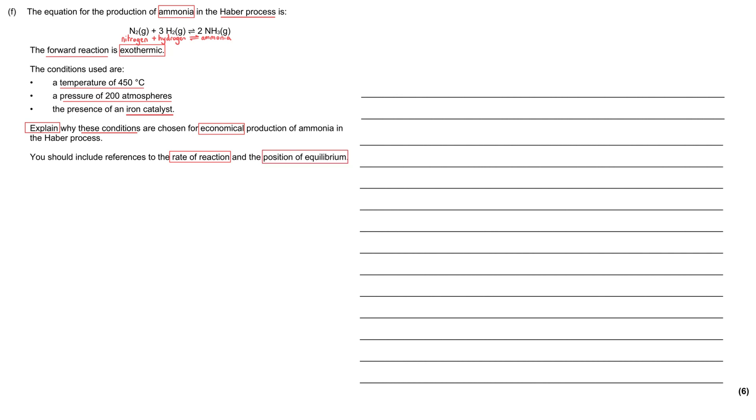When you're asked a question like this, it's really important to make sure you know what the question is asking you to do. We have to mention all three of these conditions, we have to talk about both the rate of reaction and the position of equilibrium, and we've been told that we're looking for economical production of ammonia, which means we also need to mention cost.